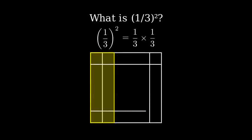Now if we also divide it into three equal horizontal parts, one-third of one-third, or one-third squared, is this small square, which represents one-ninth.